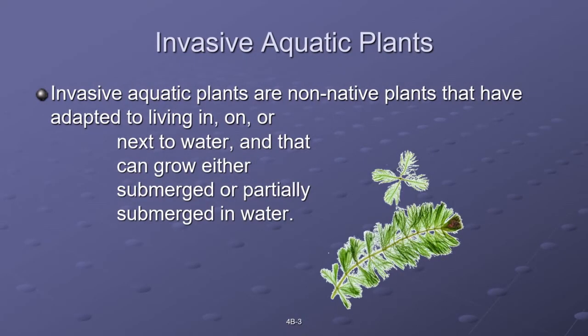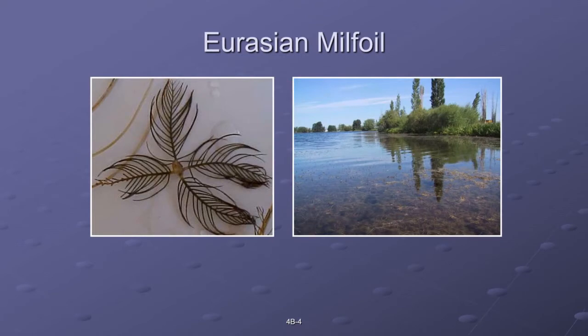We'll start with aquatic plants — invasive plants that are around water, which we happen to be working next to as well because we get water. First up in the plant category: Eurasian milfoil. It's considered the most problematic plant in Washington. They form dense mats of vegetation on the surface of the water and kind of choke out everything else. Not a good plant to be spreading around the countryside.